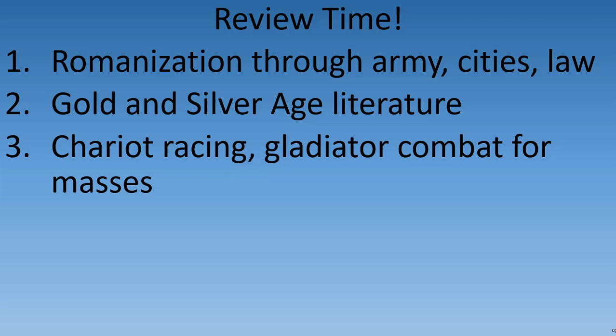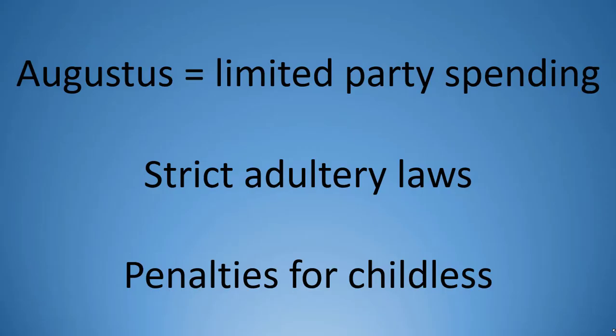Lastly for today, we cannot have a thorough look at the empire without giving a brief mention to social classes, slavery, and women. During the age of Augustus, he tried to limit the decadence of the upper classes as part of his program to reform Roman morals. To that effect, the amount of money that could be spent on lavish feasts was limited, stricter adultery laws were passed — which was more than a bit hypocritical as Augustus himself couldn't seem to follow them — and tax penalties were imposed on those who chose not to have children. Under Augustus, Roman society split into three social groups.